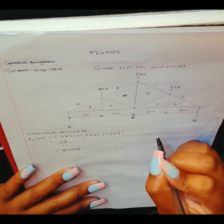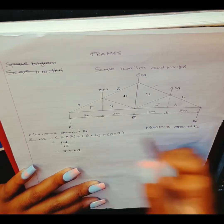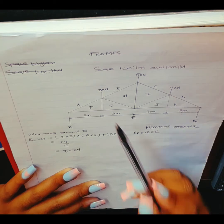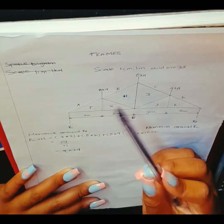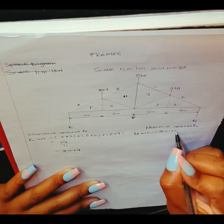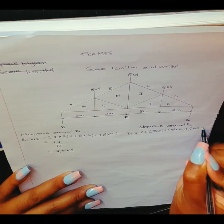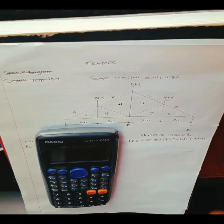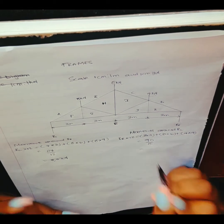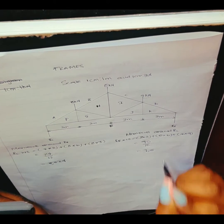For the right-hand reaction, we take moments around RL. So RR × 12 equals 8 × 3, plus 5 kilonewton × 6, plus 4 kilonewton × 9. The answer is 90. We divide 90 by 12 and we get 7.5 kilonewton. So the right-hand reaction RR = 7.5 kN.